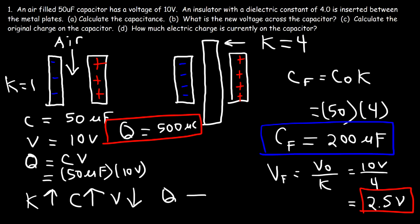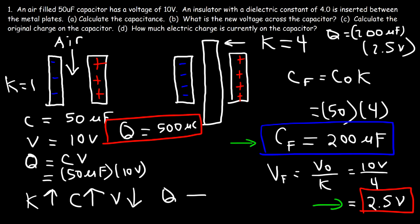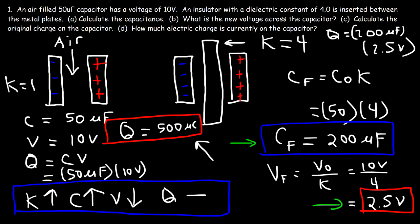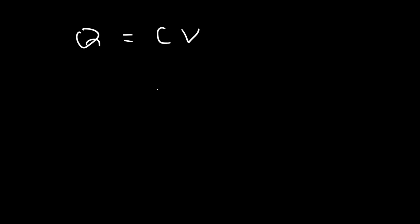Now let's calculate the new charge using the new values. Q equals CV. The new capacitance is 200 microfarads and the new voltage is 2.5 volts. 200 multiplied by 2.5 gives the same answer of 500 microcoulombs. So the charge doesn't change. Anytime you increase the dielectric constant, the capacitance increases, the voltage decreases, and the charge stays the same. If we increase C and decrease V proportionally, these two cancel such that Q stays the same.